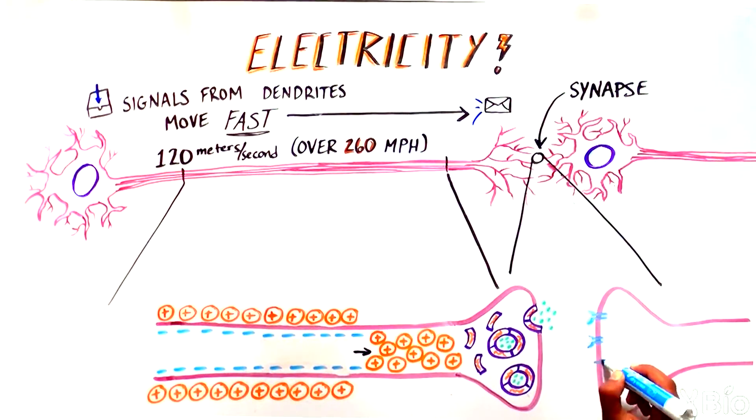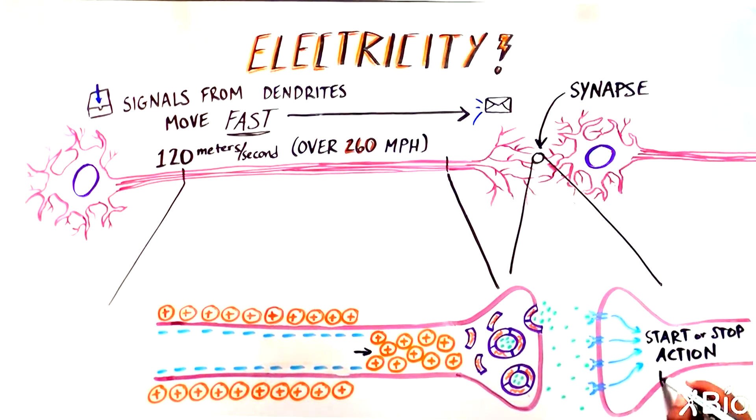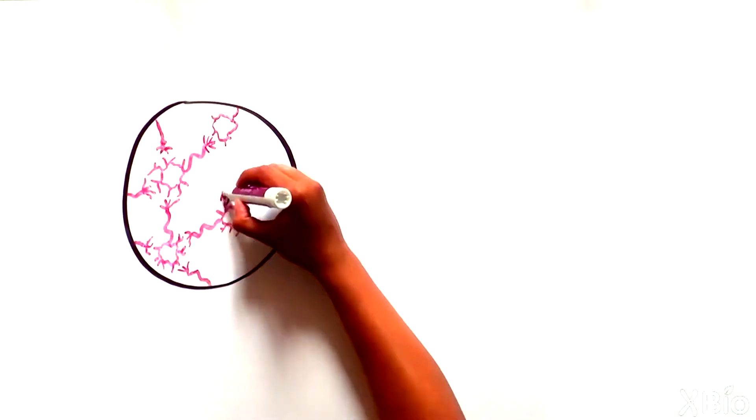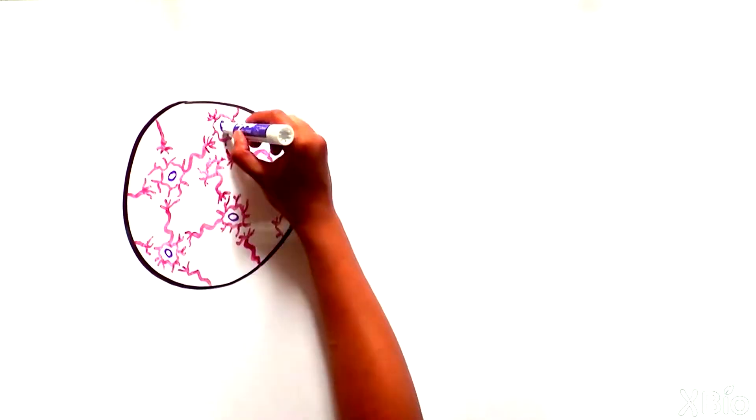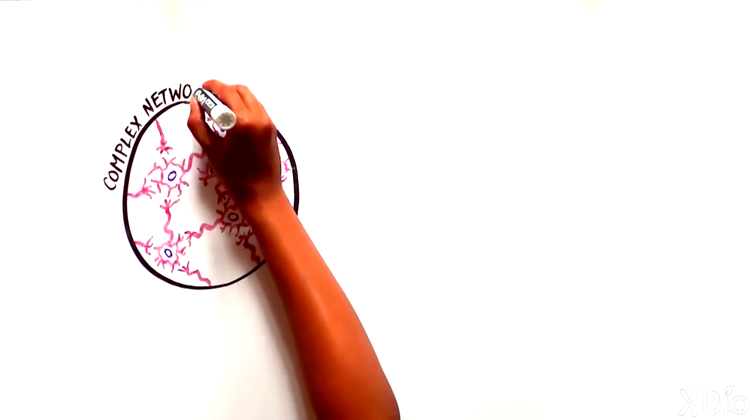Here the neurotransmitters are detected by membrane proteins on the receiving cell, which initiates a specific action, the generation or cessation of an action potential. Through this process, billions of cells are able to talk to each other and form the complex network of interconnected neurons that make up the nervous system.